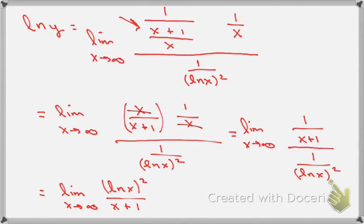Taking that limit, the numerator goes to infinity and the denominator goes to infinity, so we're still in an indeterminate form. We can apply L'Hôpital's Rule again — we're going to have to hit it again.